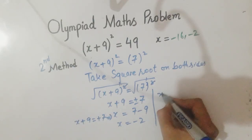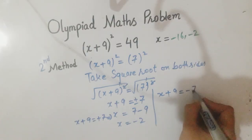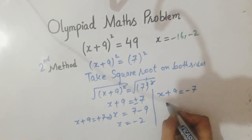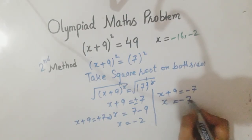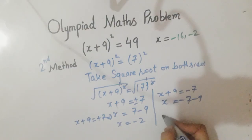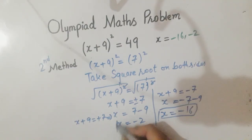Now we will write x + 9 = -7. This means x = -7 - 9, so -7 - 9 = -16. So you can see that by the other method we also get the values of x that are -2 and -16.